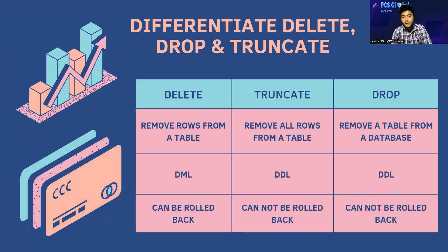Differentiate DELETE, DROP, and TRUNCATE. These three commands are used for delete operations in SQL. DELETE removes rows from a table one at a time. TRUNCATE removes all rows from a table at once. DROP removes the whole table from the database. So with DELETE and TRUNCATE you delete the data or rows from the table, but using DROP you remove the whole table from the database.